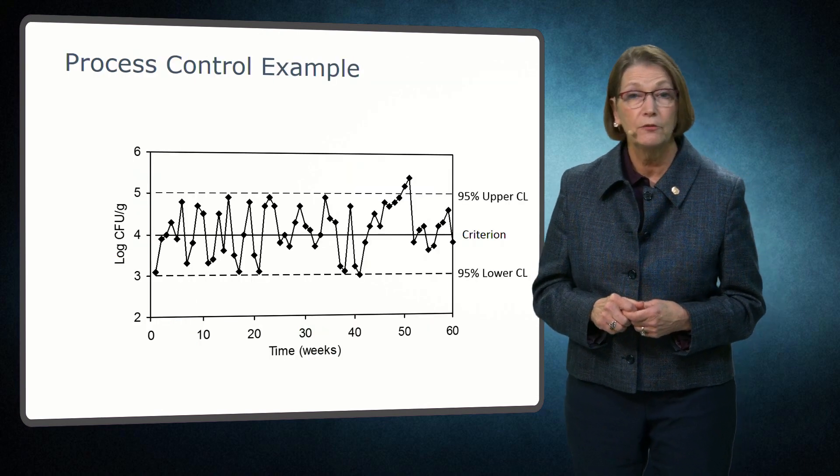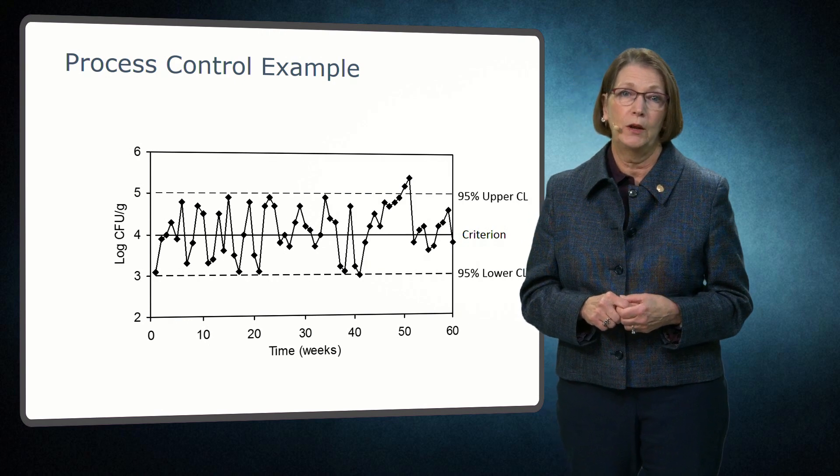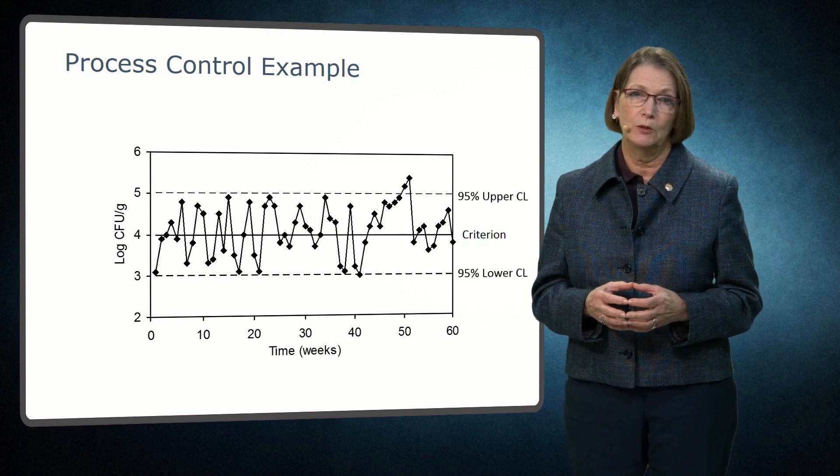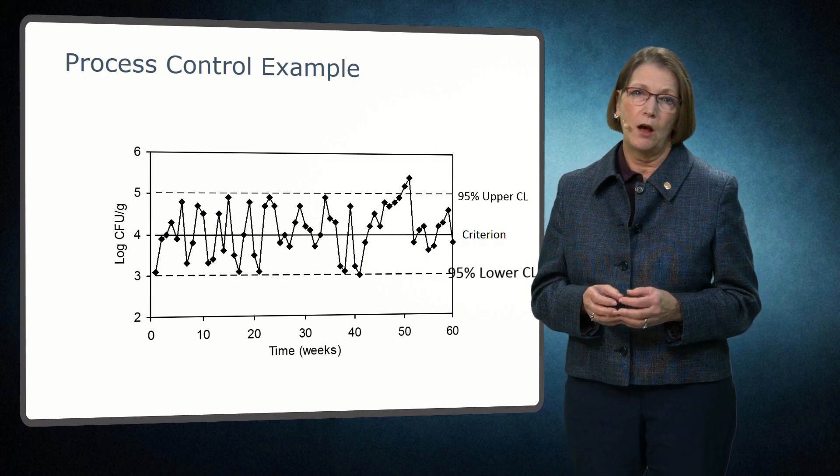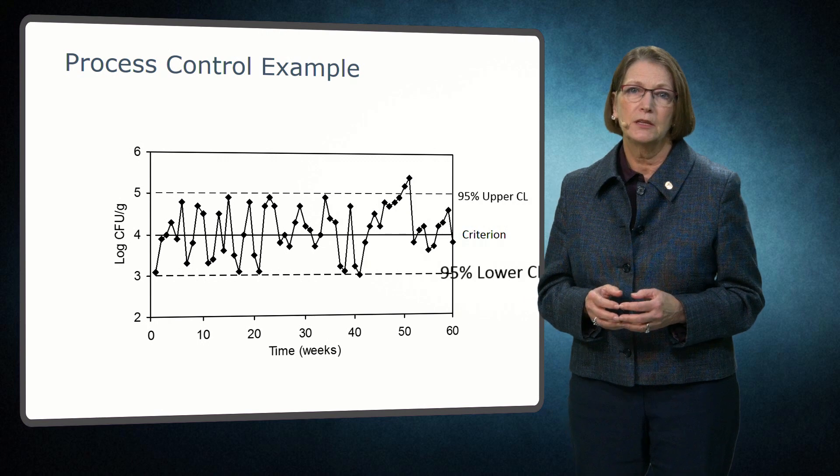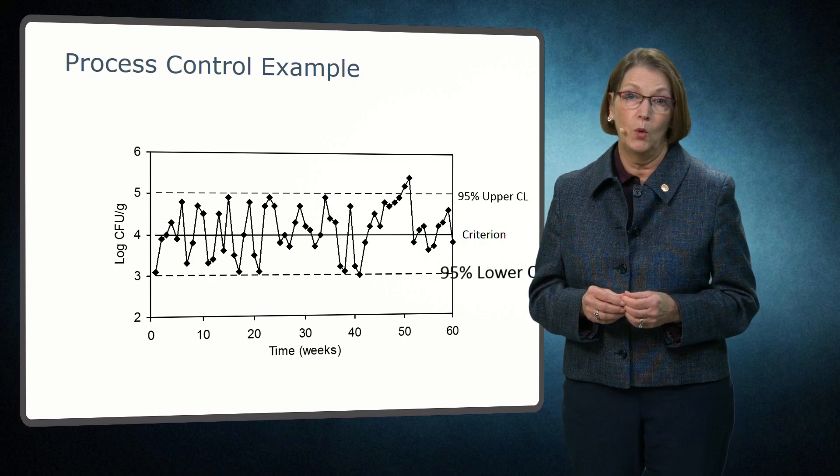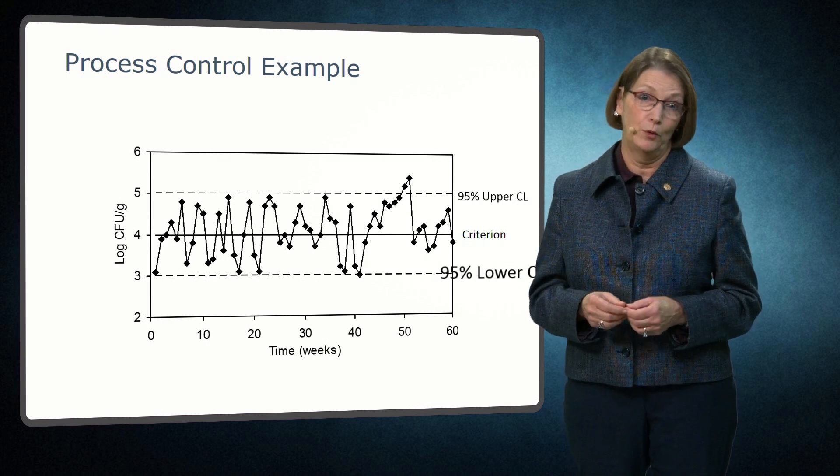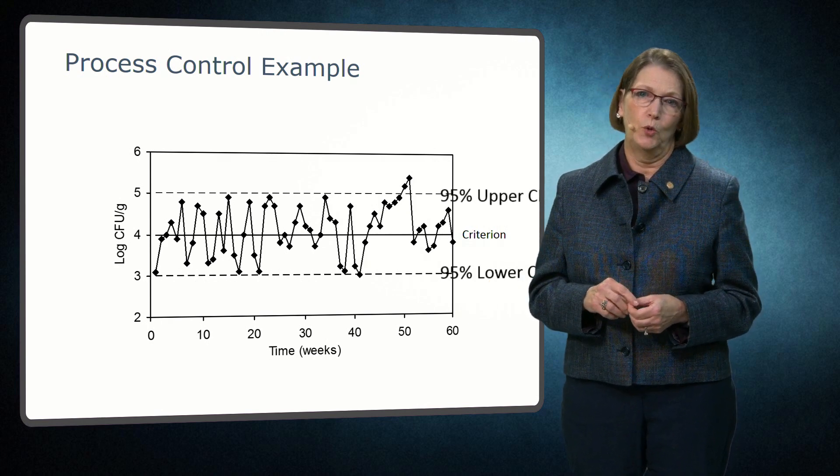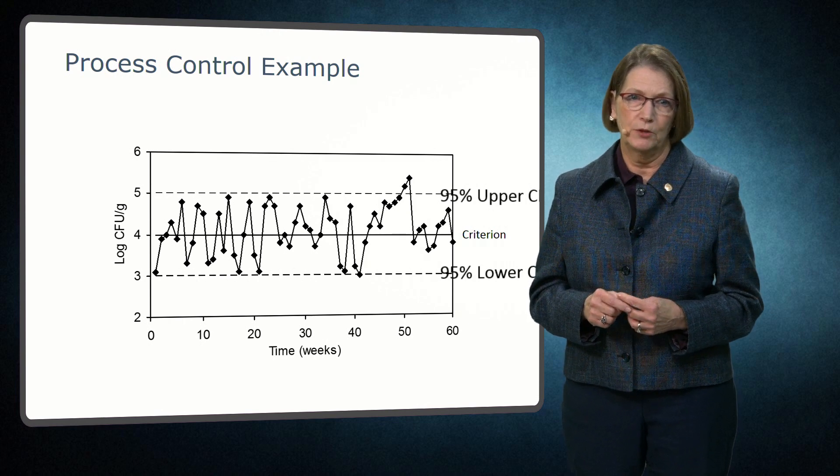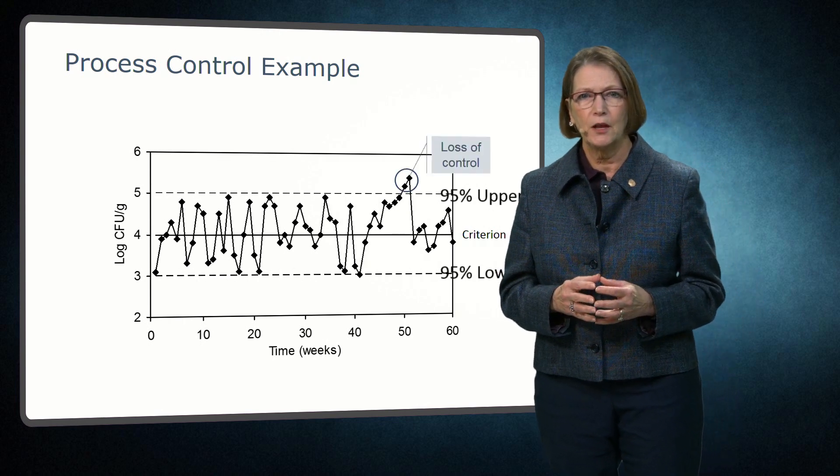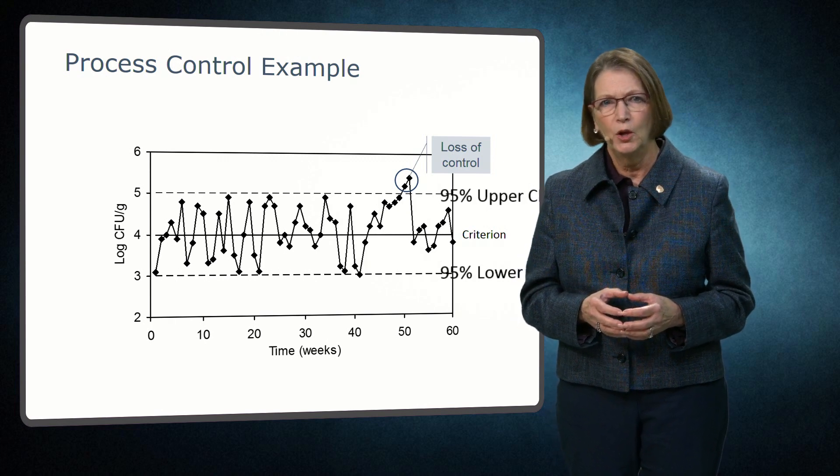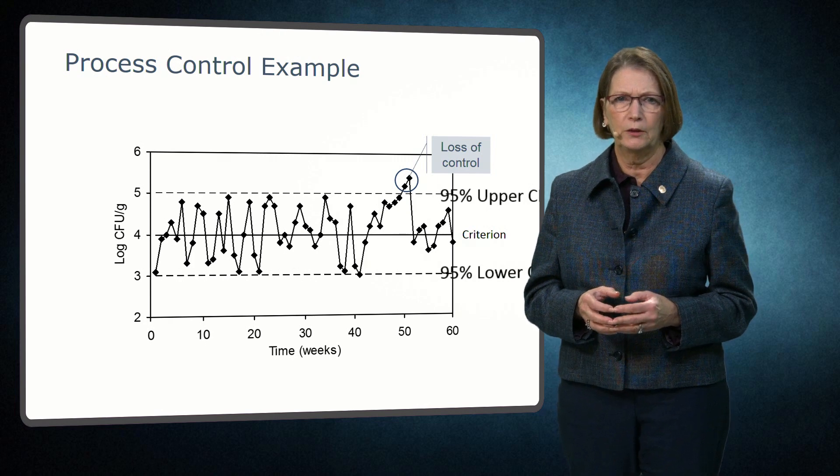Statistical process control can be a very useful tool in evaluating verification data for process control. When using microbial count data, the lower confidence limit typically is not considered to play a role, but automated statistical process programs will provide the information anyway. The upper control limit indicates a loss of control. Notice that the loss of control occurred around week 50 and 51, which would require investigation and likely corrective action.